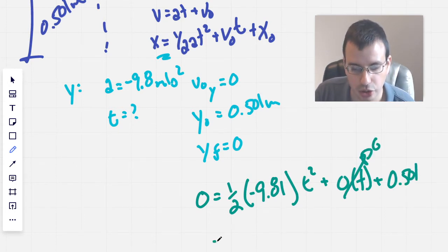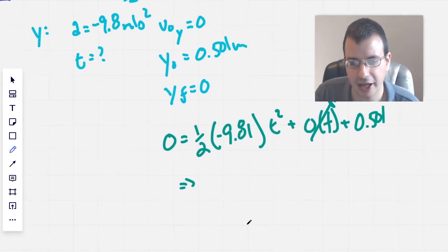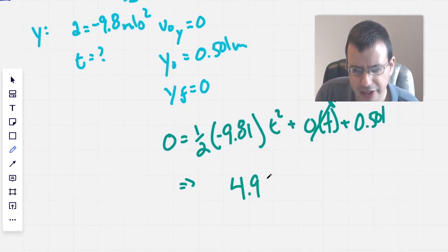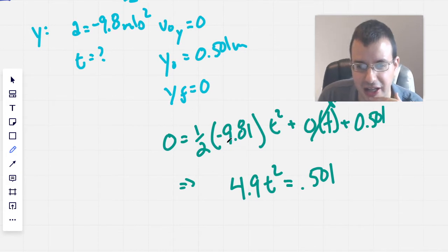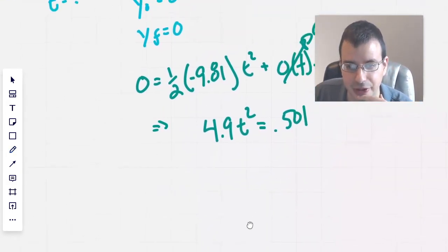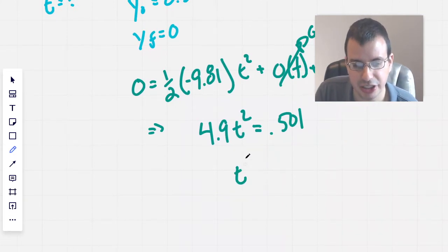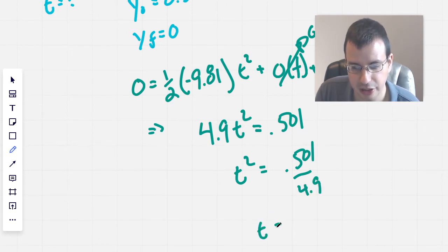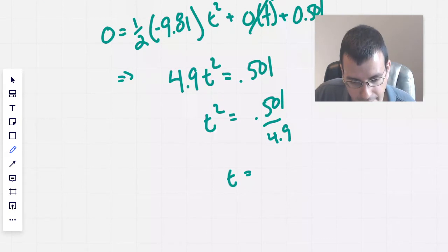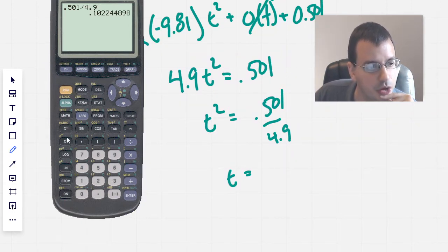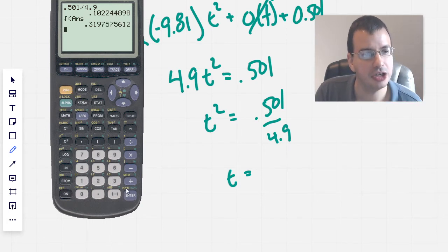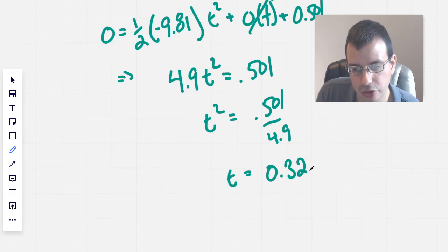Okay, this part goes to zero. We're rearranging things slightly. We have 4.9 t squared equals 0.501. I just moved this to the other side and rounded 0.981 to 0.9 or 9.8 because it's simpler. So then t squared equals 0.501 over 4.9. t equals, calculator. 0.501 divided by 4.9. Second square root, second answer. We get 0.32, 0.32 seconds.